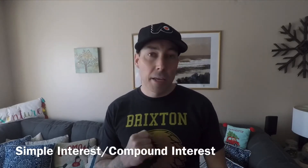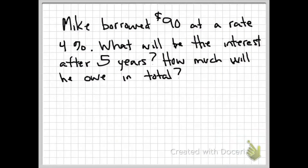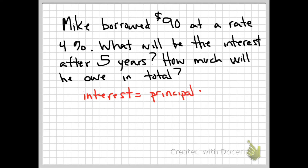Please make sure you are subscribing, commenting, liking, and sharing — all of that helps me out. All right, we're going to look at a simple interest problem. The formula for simple interest is: Interest equals the Principal — that's the initial amount you borrow — times the Rate, which is your percent, times the Time.